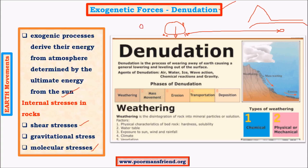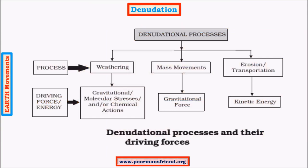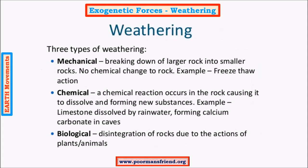Molecular stress is an internal stress — there is always a bond between molecules, but when an external force overcomes this bond, the molecules separate. This is induced mainly by chemical actions and external heat energy through thermal processes. Denudation involves weathering, mass movements or erosion, and deposition. Weathering involves gravitational, chemical, and molecular stresses; mass movement happens under gravity; erosion involves kinetic energy of particles in motion; and deposition occurs when kinetic energy ceases.